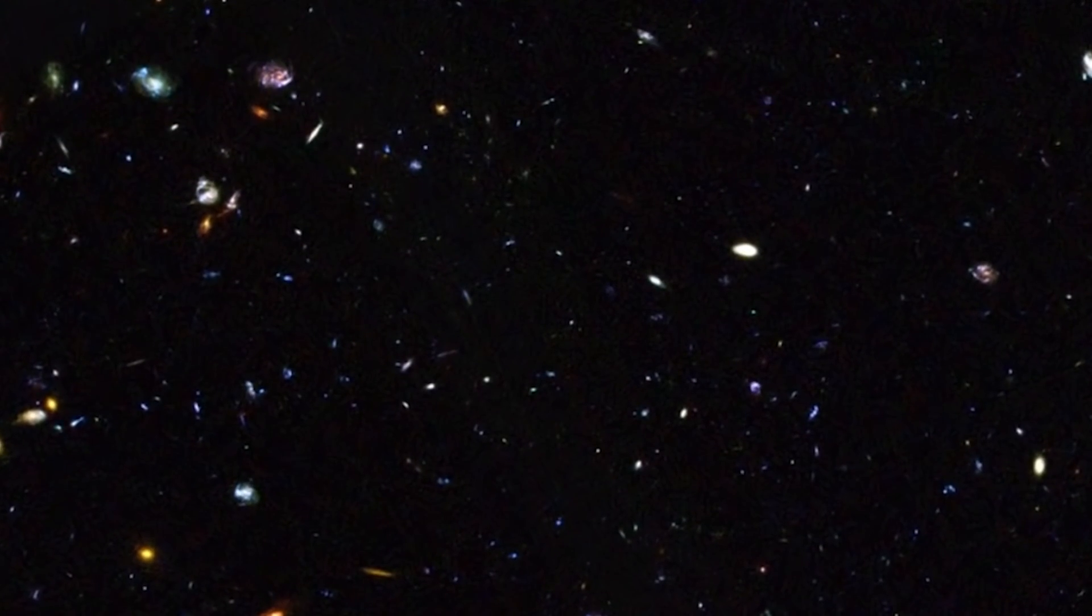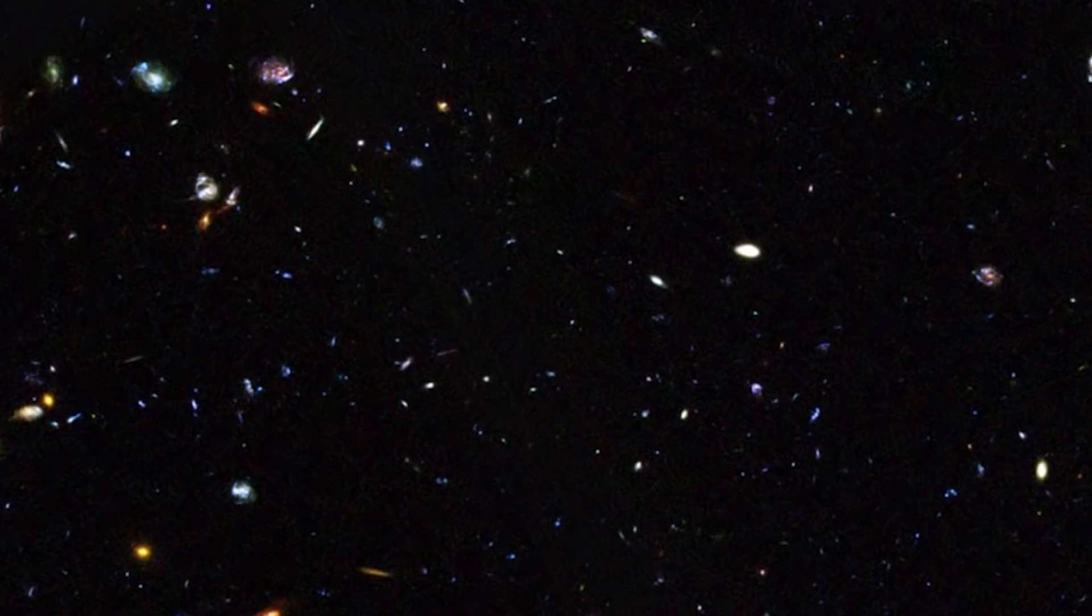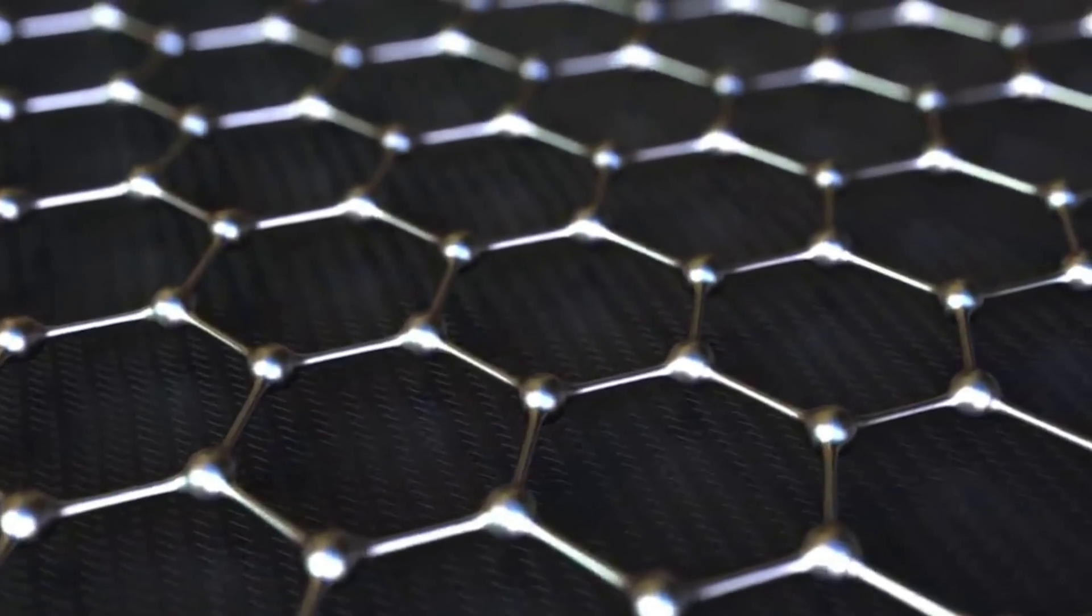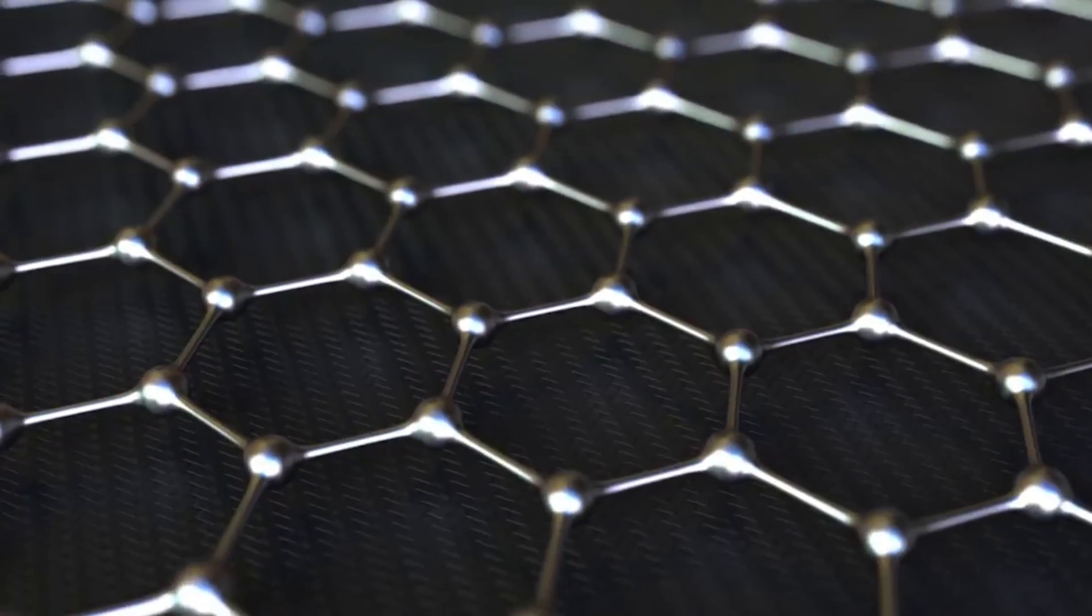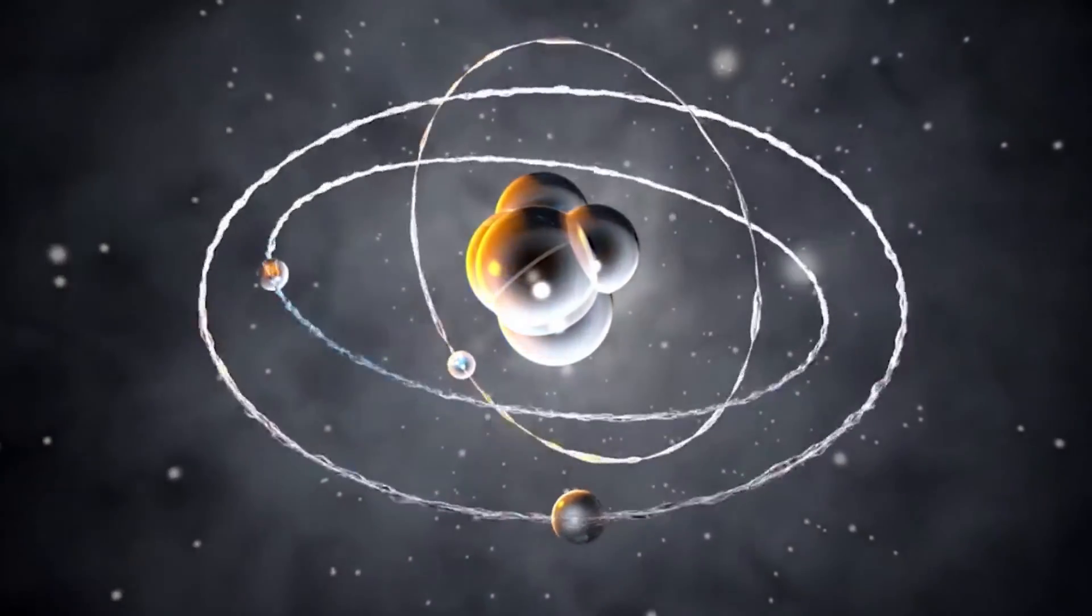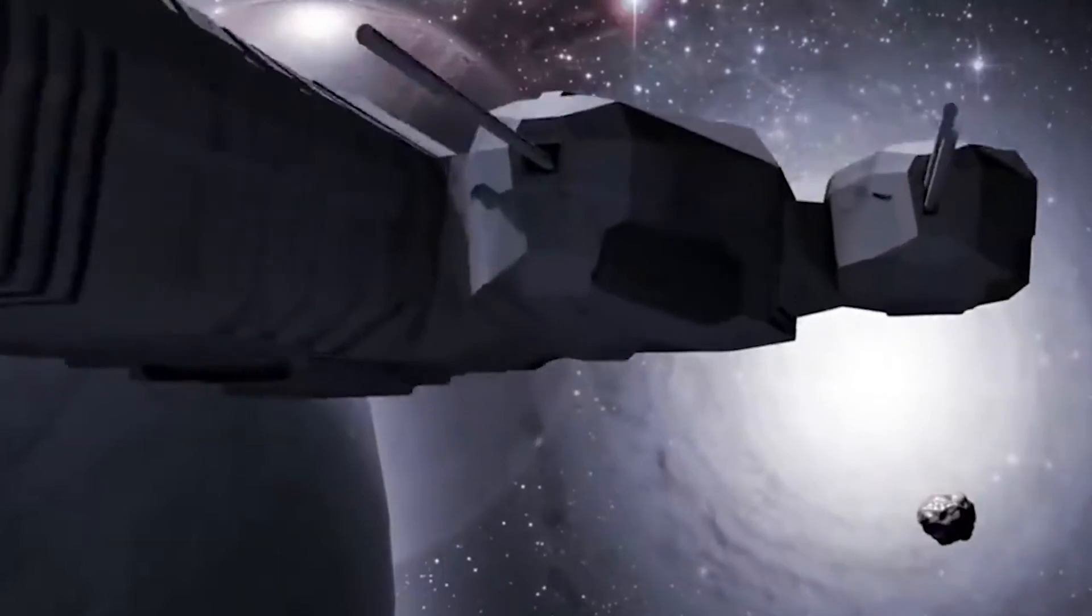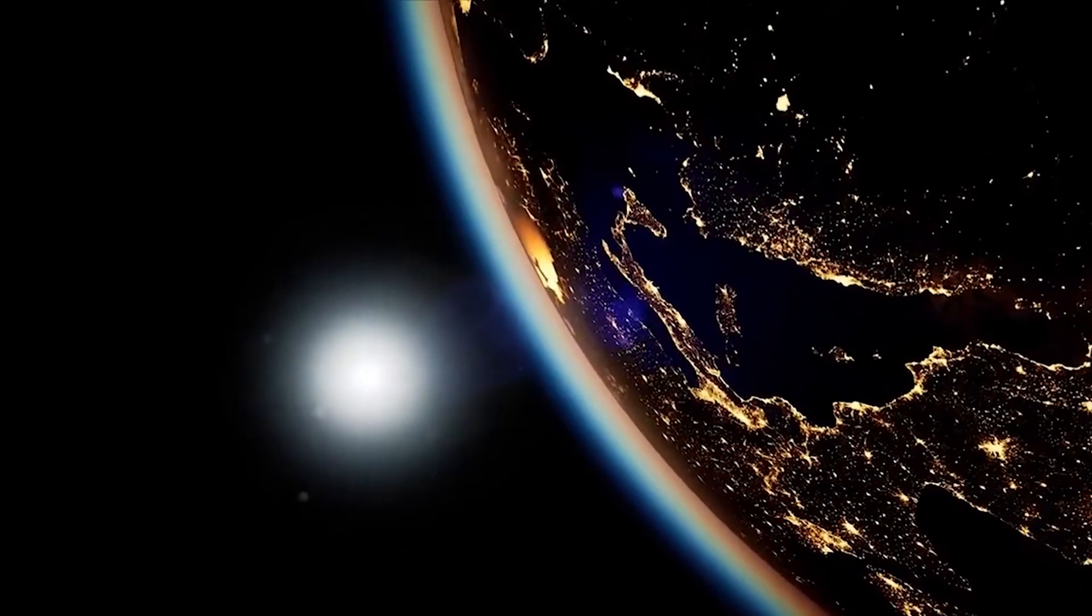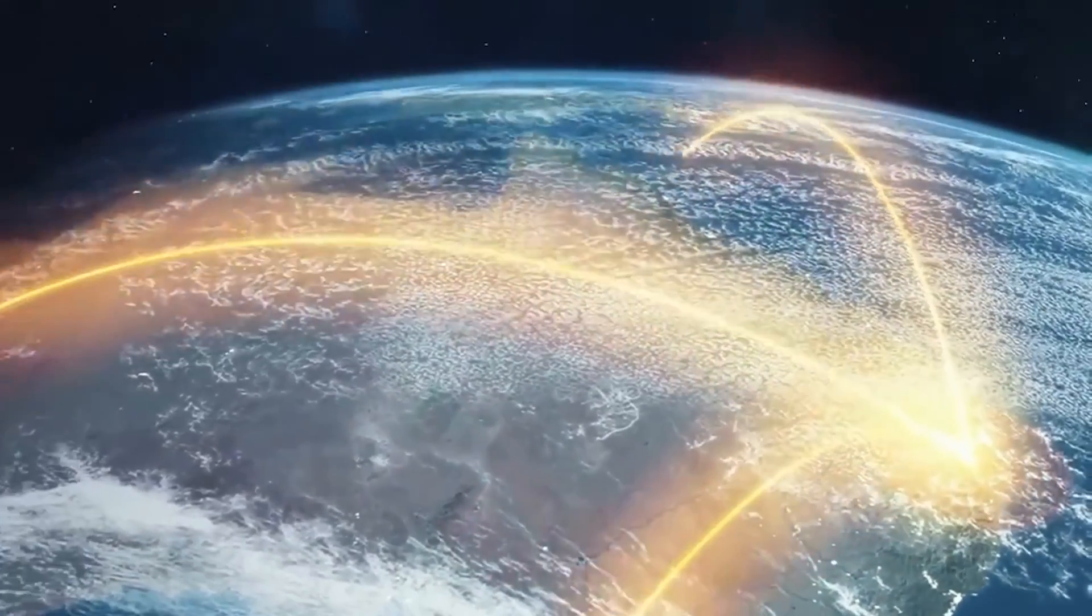Nobody knows for sure how the universe created the fine structure constant, or most of the other fundamental constants. Physicists tend to believe that they were randomly handpicked by the universe itself. But in any case, it seems to have selected the right value to support the existence of life. But that's not even the strangest thing about this constant. The more confusing thing about this figure is that it's dimensionless.